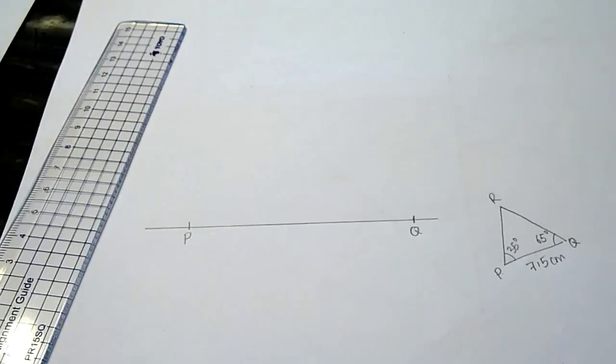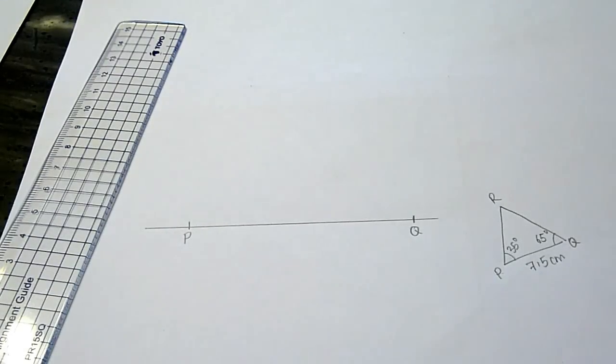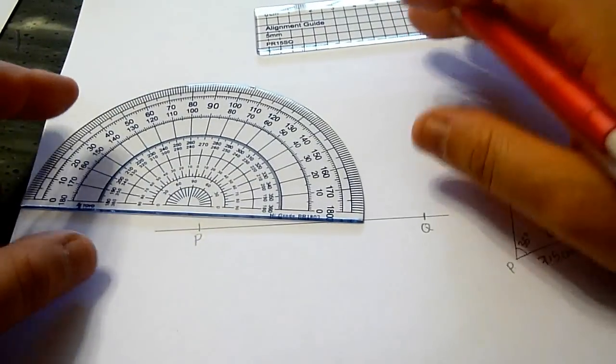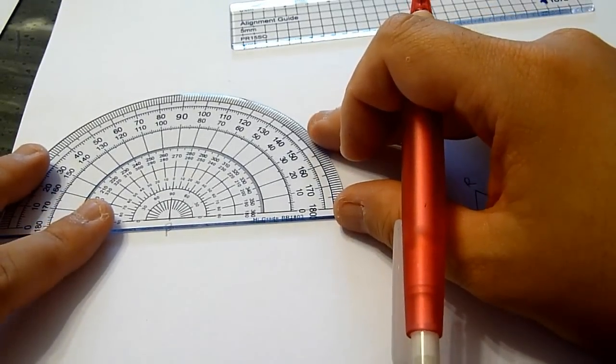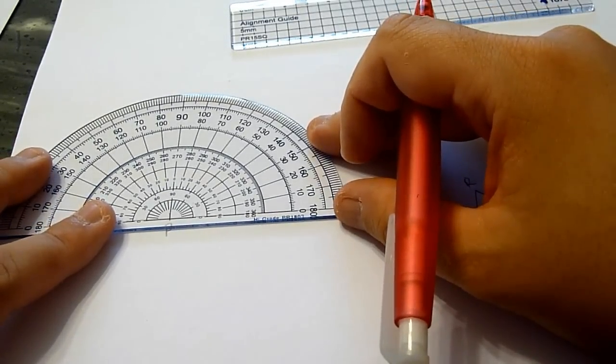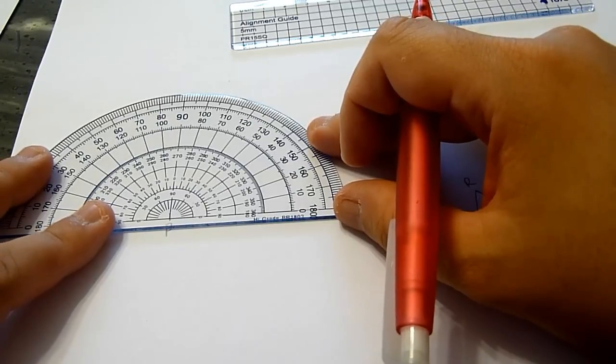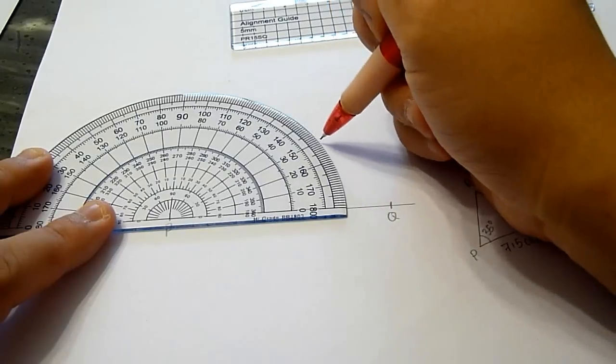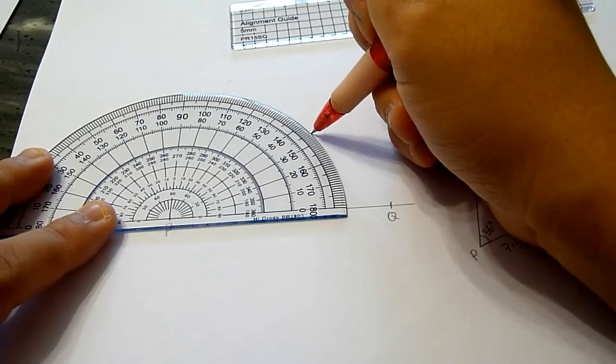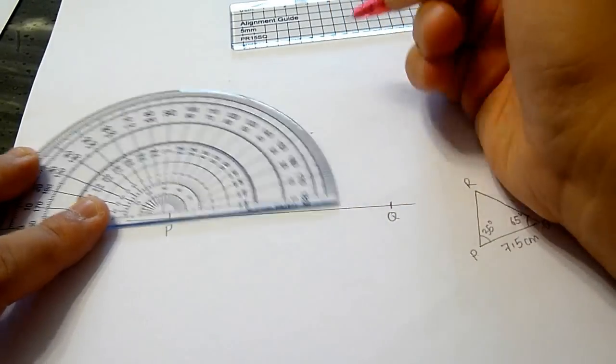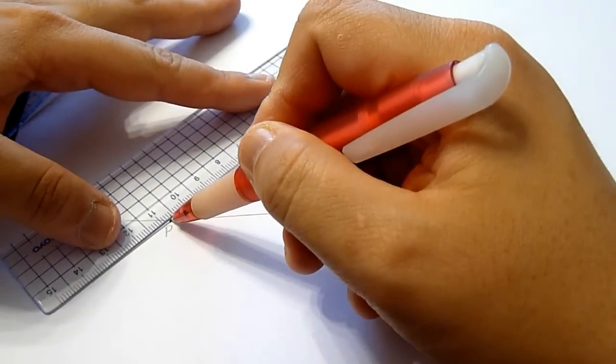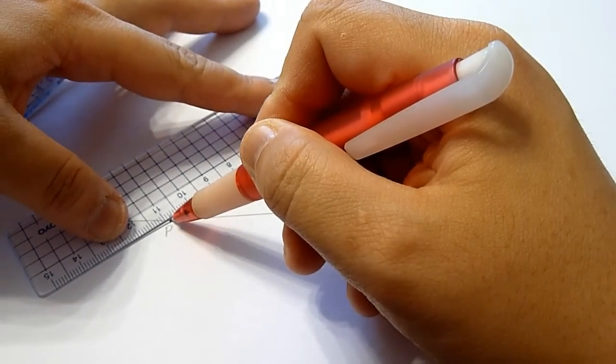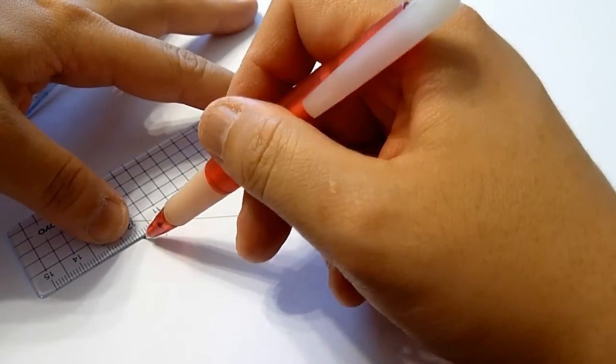Now, we will use a protractor to measure 35 degrees from point P, and use a ruler to join point P to where we mark out the angle.